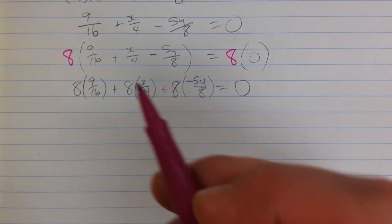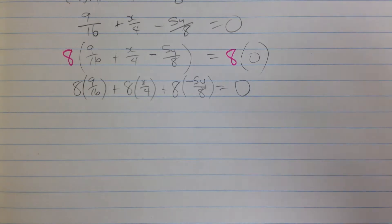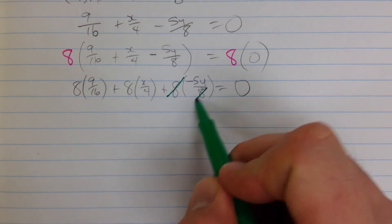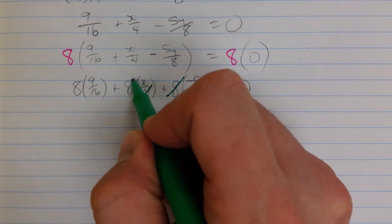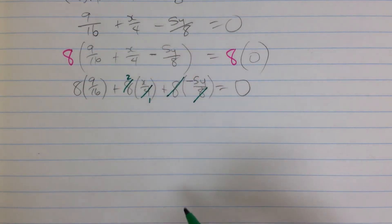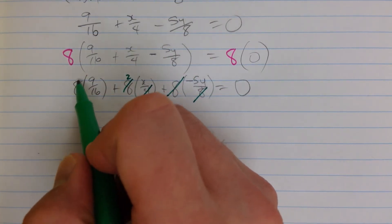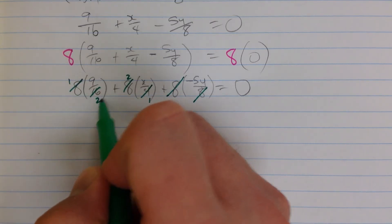Now we're going to do a bit of cancelling. This one is the one that we did on purpose here, this 8 and this 8 are going to cancel. That's why we chose 8. Here 8 and 4, that's 1 of those and 2 of those. And there are 2 8ths and a 16, so there's 1 and 2.